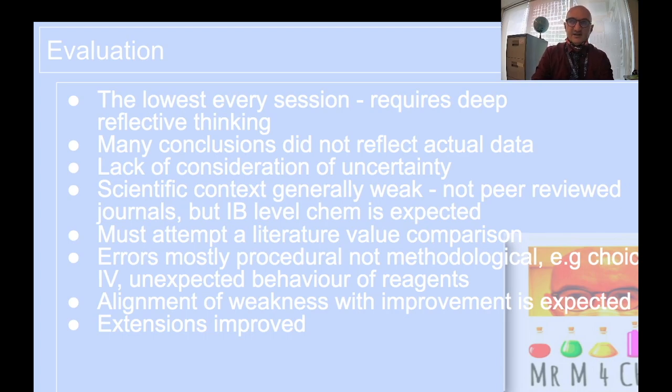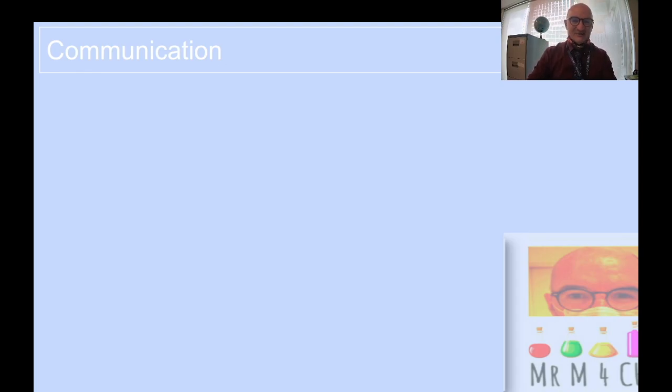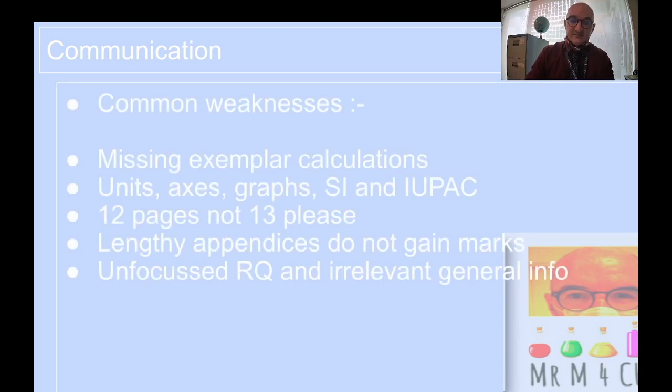all distinction is all about the structure of the report, the accuracy of the chemistry. Don't include flawed chemistry. It's just embarrassing for you and for your school. Check the veracity of your chemistry. We need to see IUPAC nomenclature. We need to see SI units. We need to see consistent decimal places. We need to see the uncertainties propagated throughout.